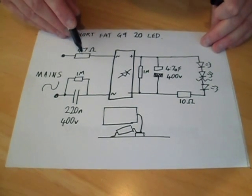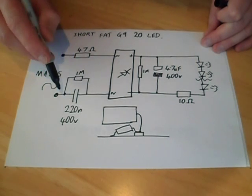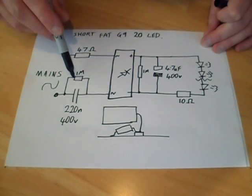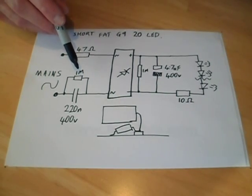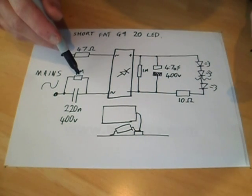We've got a 47 ohm resistor, the bridge rectifier, a 220 nanofarad capacitor as the limiting factor, with a really quite unpleasantly sized 8th watt resistor across it, which is really not rated to have the mains voltage across it.